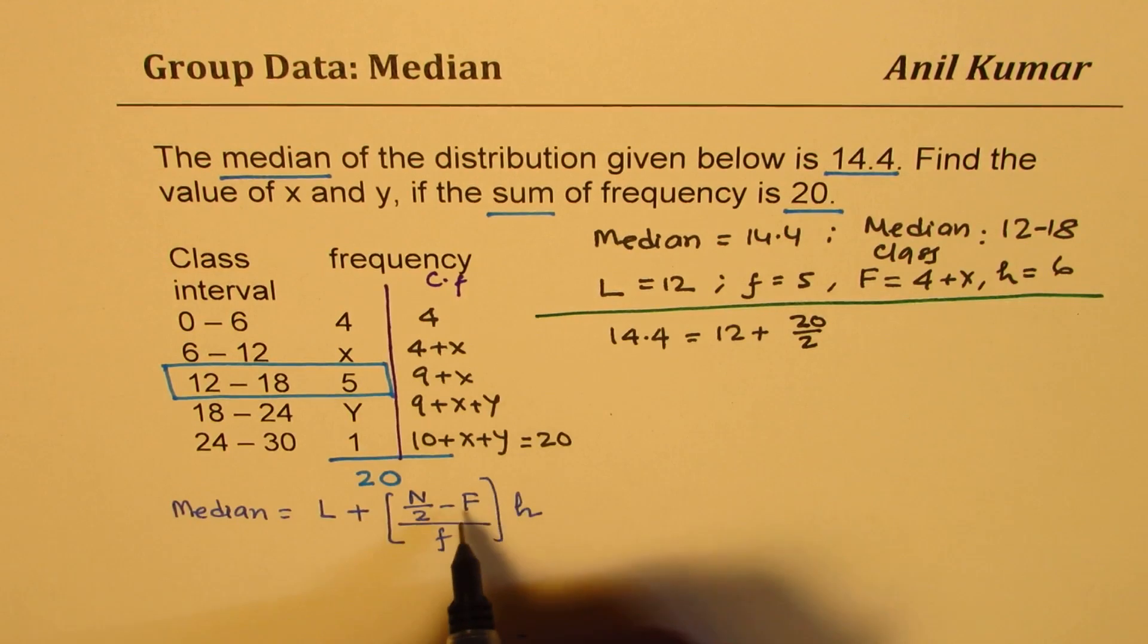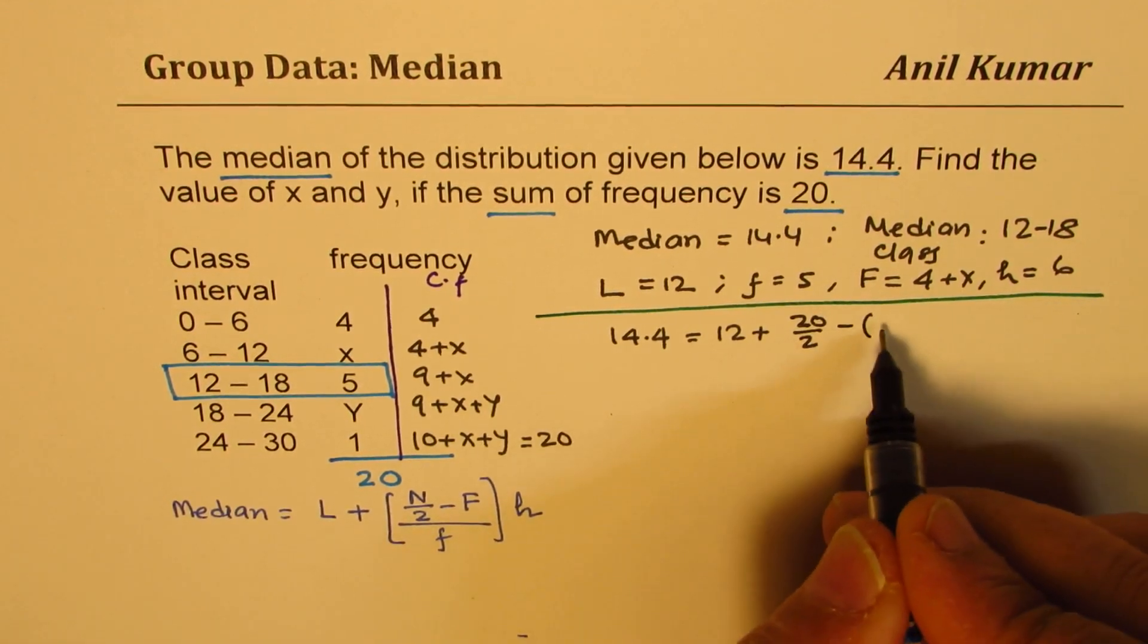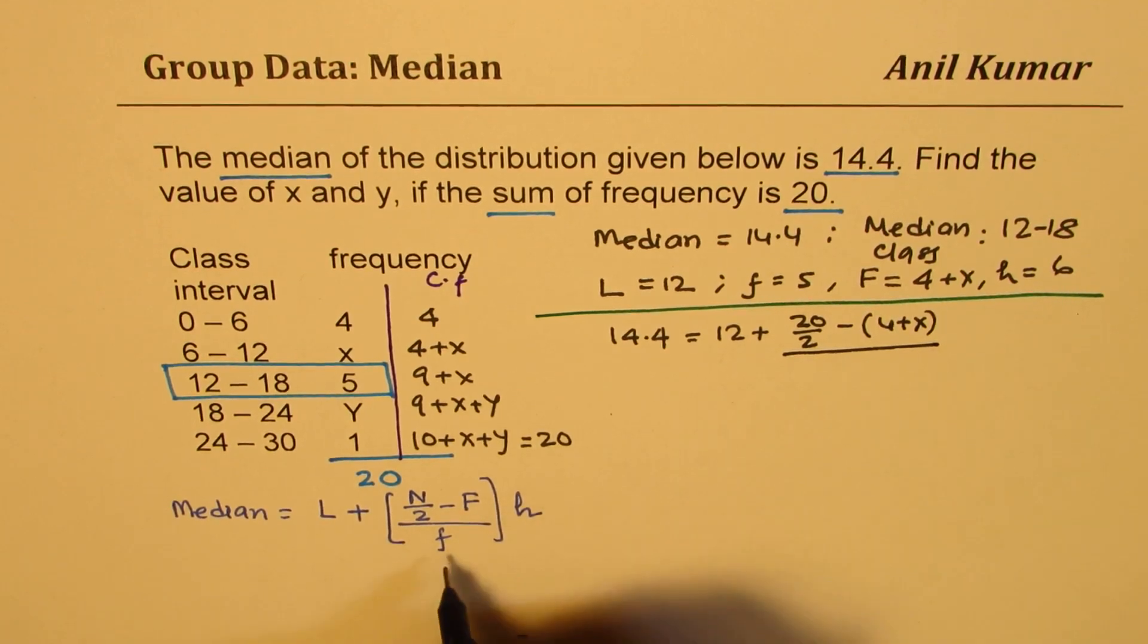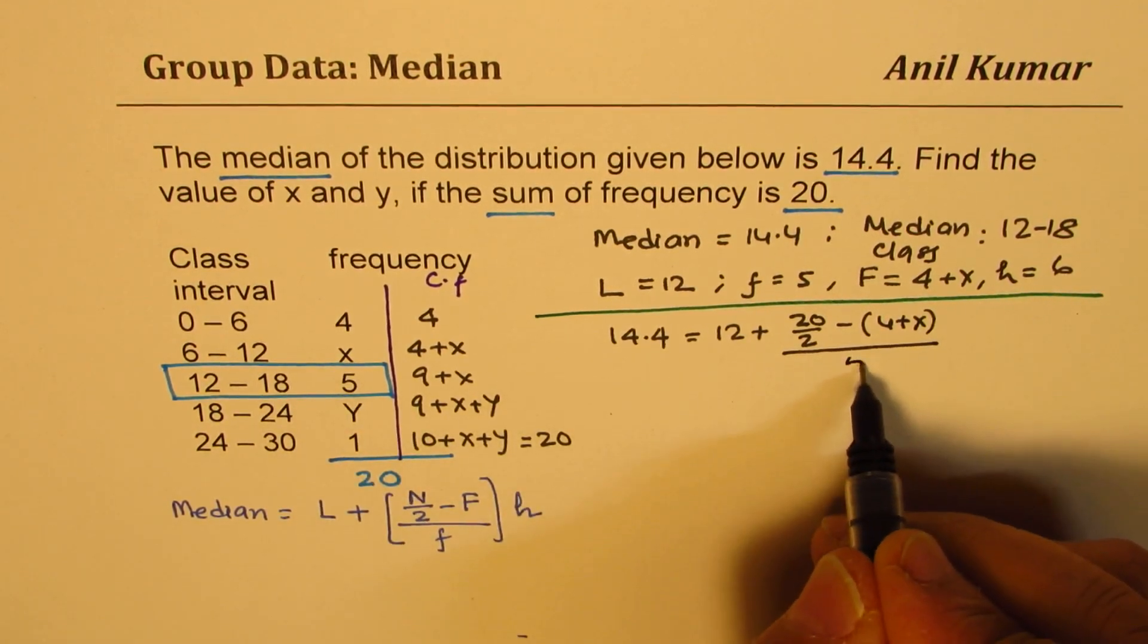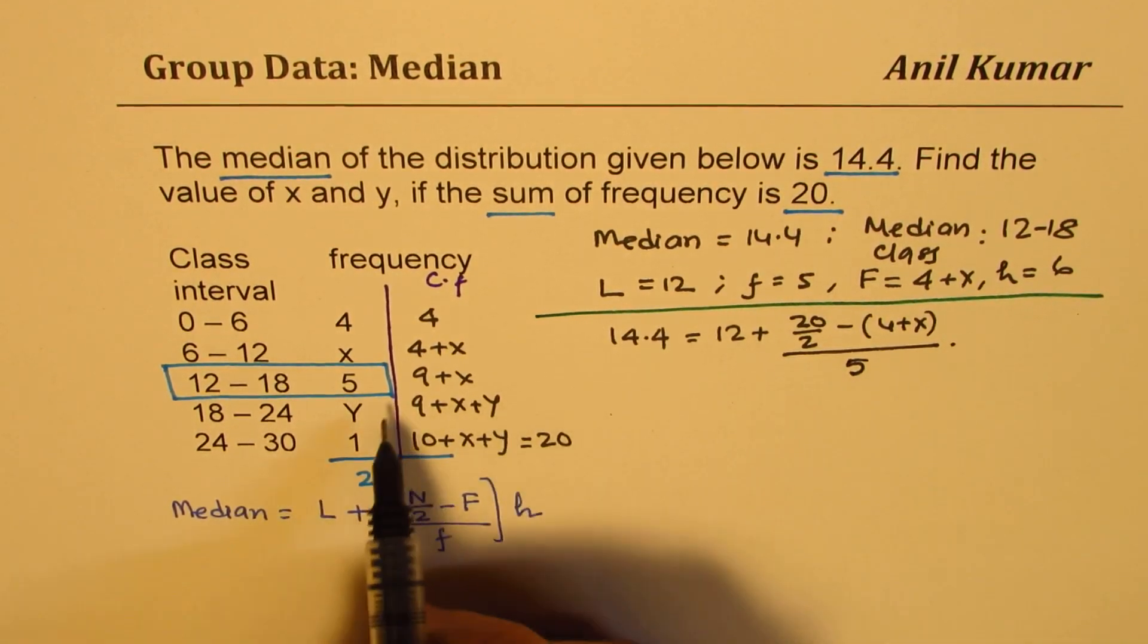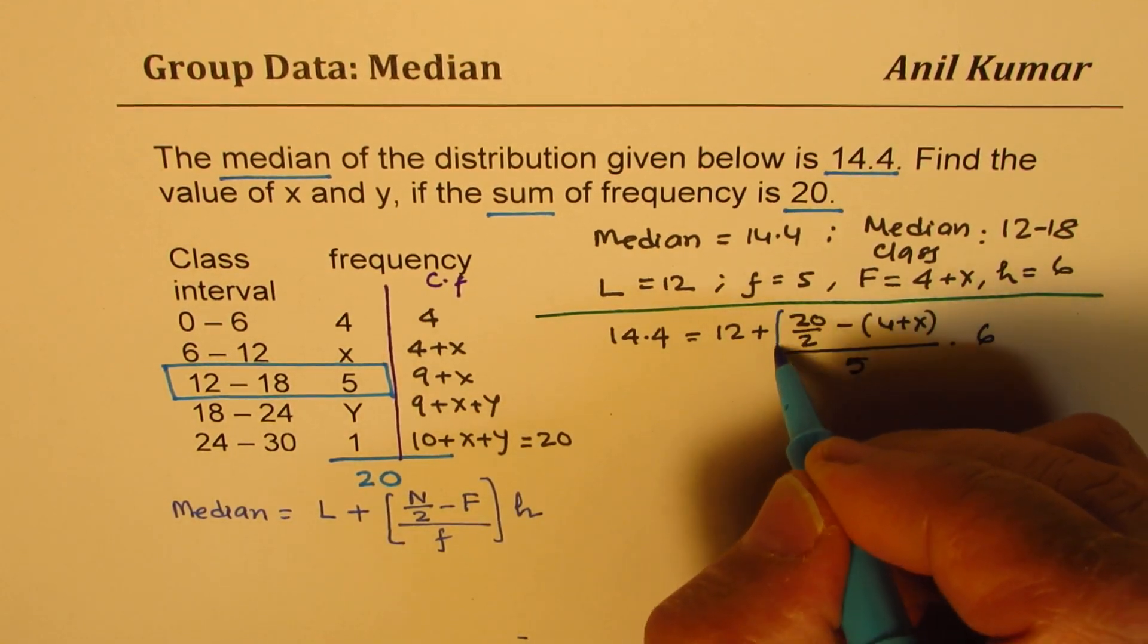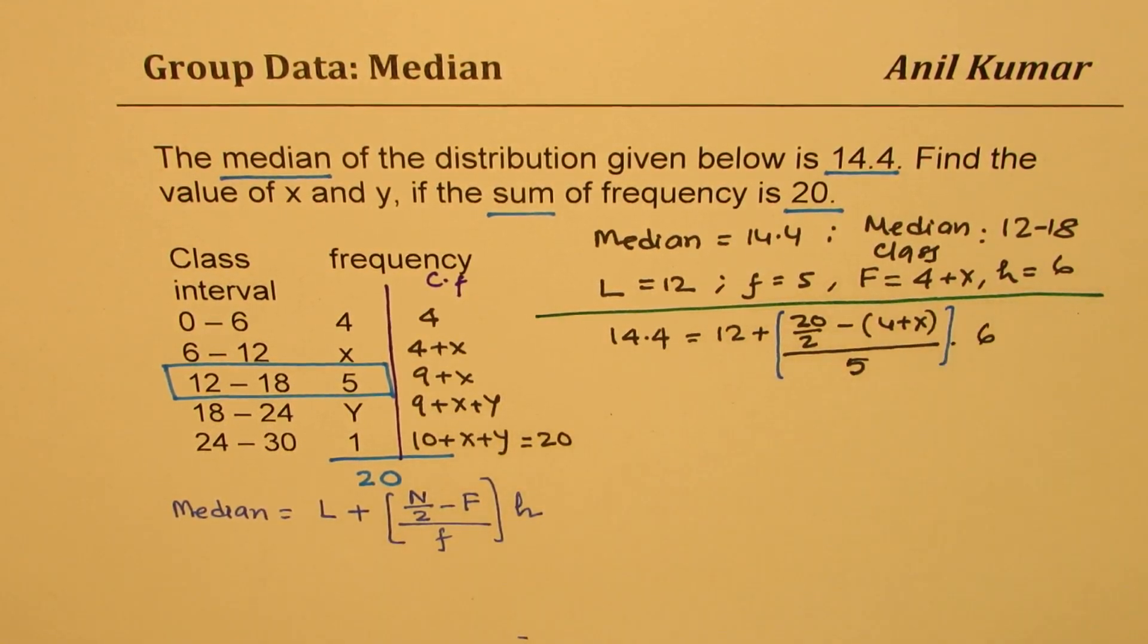Minus 4 plus x, which we need to figure out, divided by the frequency 5, times the interval which is 6. So that is the formula for us. You could actually make a bracket, not really required.